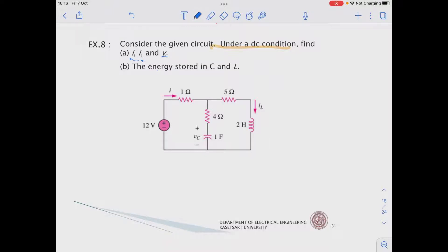Since we know that WC equals 1 over 2C VC squared, if we can solve this one, then we can solve this one. And for L, WL is also equal to 1 over 2L IL squared.